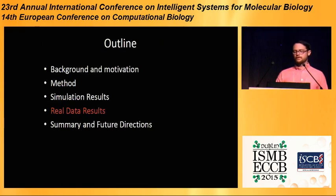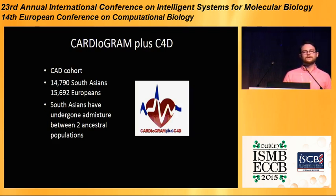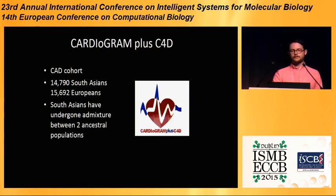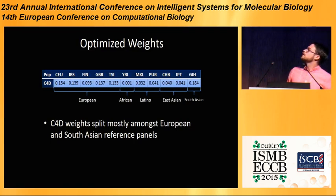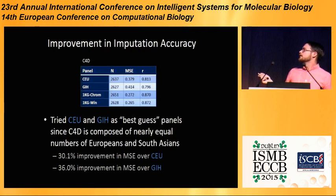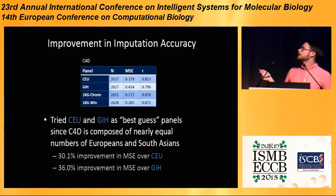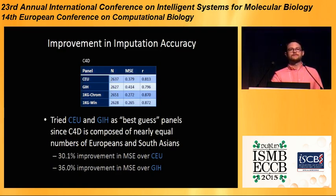Now I'll tell you about the real data results. We decided to look at the cardiogram plus C4D study, which is a coronary artery disease cohort consisting of about 1,500 Europeans and 1,500 South Asians. It's particularly interesting because South Asians have undergone admixture between two ancestral populations. We get very reasonable results for the weights, split mostly among European and South Asian populations with the largest weight on the GIH South Indian population. We get a large improvement in imputation accuracy — 30% in MSE for CEU and 30% for GIH when we use GIH and CEU as the best-guess reference panels. The mean squared error is still relatively high, but compared to using either of the best-guess panels, we do quite well. We weren't able to look at the improvement in joint testing accuracy because we don't have access to the original genotypes to compute the original correlations.